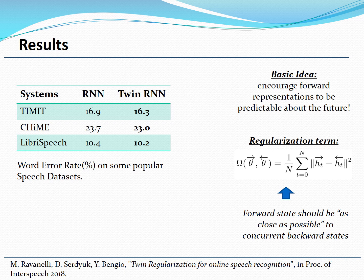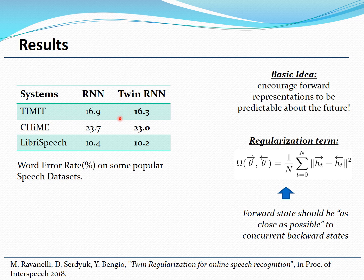Let me now show you some of the results we have obtained. The full set of results can be found in our paper on arXiv. Here we compare a unidirectional RNN and a twin regularized RNN on several speech recognition tasks: Timit, CHIME, and LibriSpeech, using gated recurrent units as the RNN. Results are reported in terms of word error rates for CHIME and LibriSpeech, and phoneme error rates for Timit. Comparing a standard RNN and a twin regularized RNN, you always see a small performance improvement, making this approach very interesting.